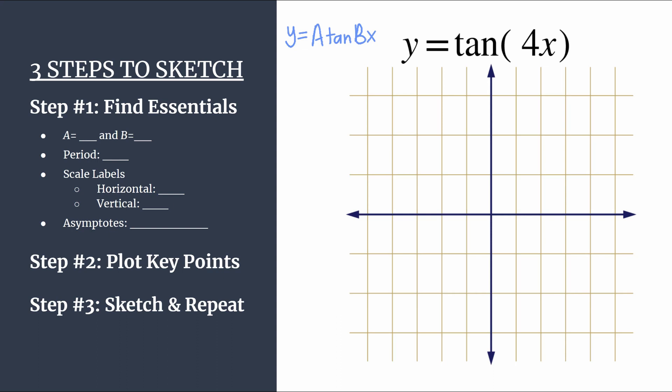Step one, we'll find our essential information. We'll identify a and b first. So a is an understood 1 in front of tangent. A is your vertical stretch or compression factor. Here it's 1, so it is identical to the parent function y equals tangent x in terms of there's no vertical stretch or shrink on it. But you can also think of a as the term that's going to shape the curve and how steep it looks, and it's going to set those points that are in between the x-intercepts and the asymptotes.